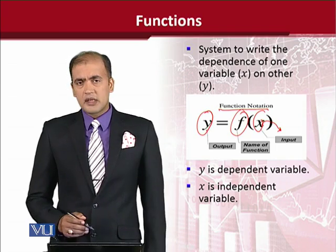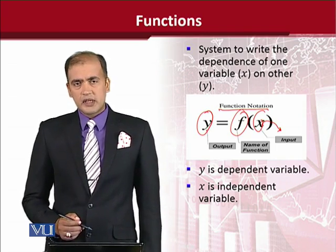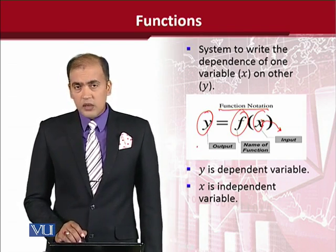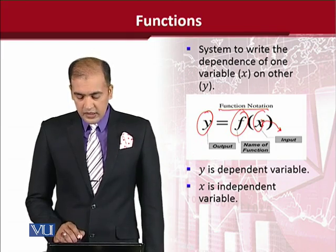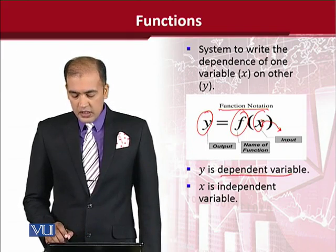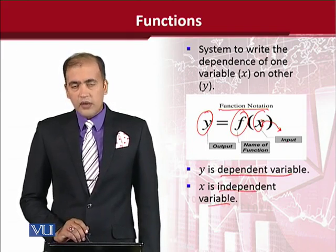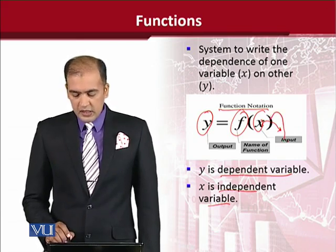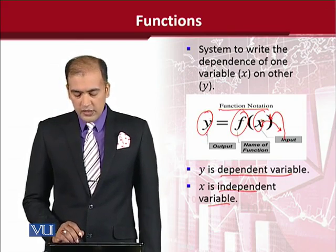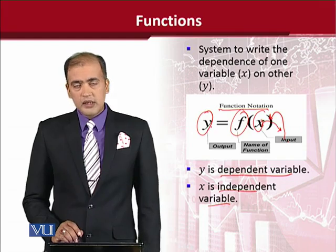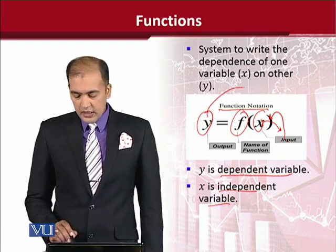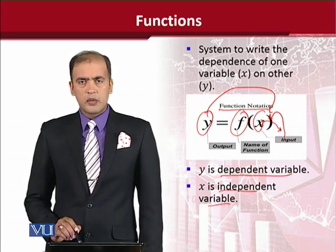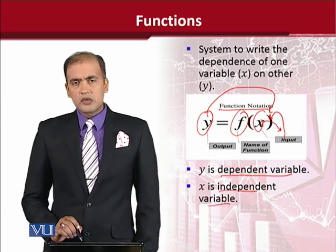In mathematics and in mathematical economics, we are basically dealing with variables. So calling the output as dependent variable and calling the input as independent variable will be more appropriate. This is independent variable which we provide; it does not depend on y. And this is dependent variable which we get as a result, and it depends on x. So it is dependent upon x. This is how we use the notation of a function.